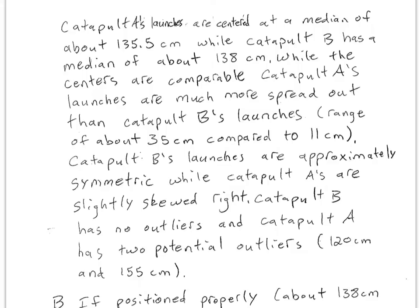So I said while the centers are comparable, and they're only off by a couple of centimeters, catapult A's launches are much more spread out. They're much more variable than catapult B's launches. The range is about 35 centimeters for catapult A, only about 11 centimeters for catapult B. Again, I'm estimating these ranges. It's okay to estimate.